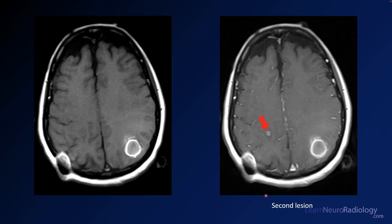You also see some gradient echo effect in that other lesion, confirming there's a lesion there — so there are at least two lesions in this patient. On the pre- and post-contrast, the second lesion on the right side is enhancing because it's not bright on the pre-contrast. However, the dominant lesion is predominantly T1 hyperintense because of the blood products — it really looks mostly like T1 intrinsic hyperintensity from blood.